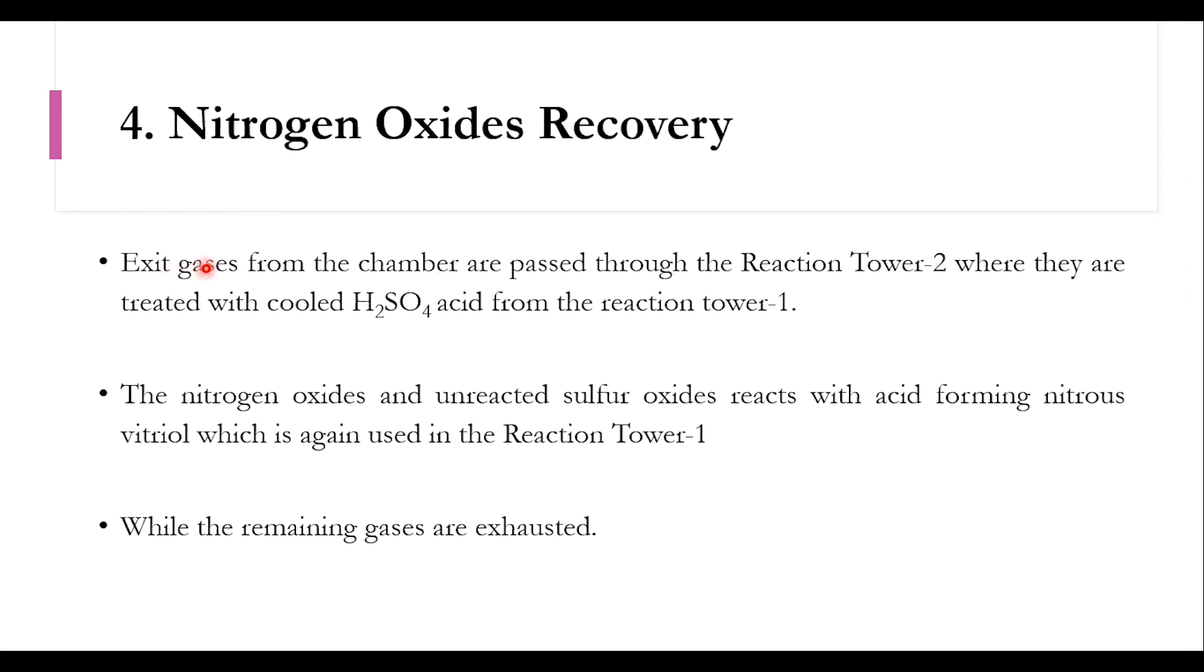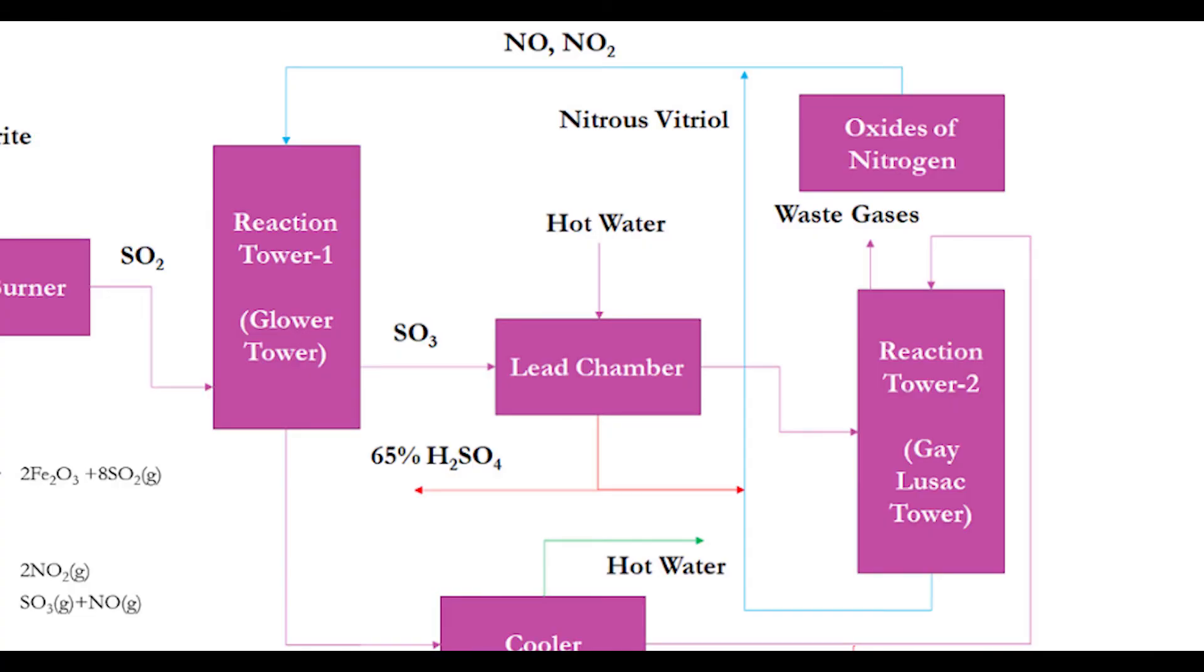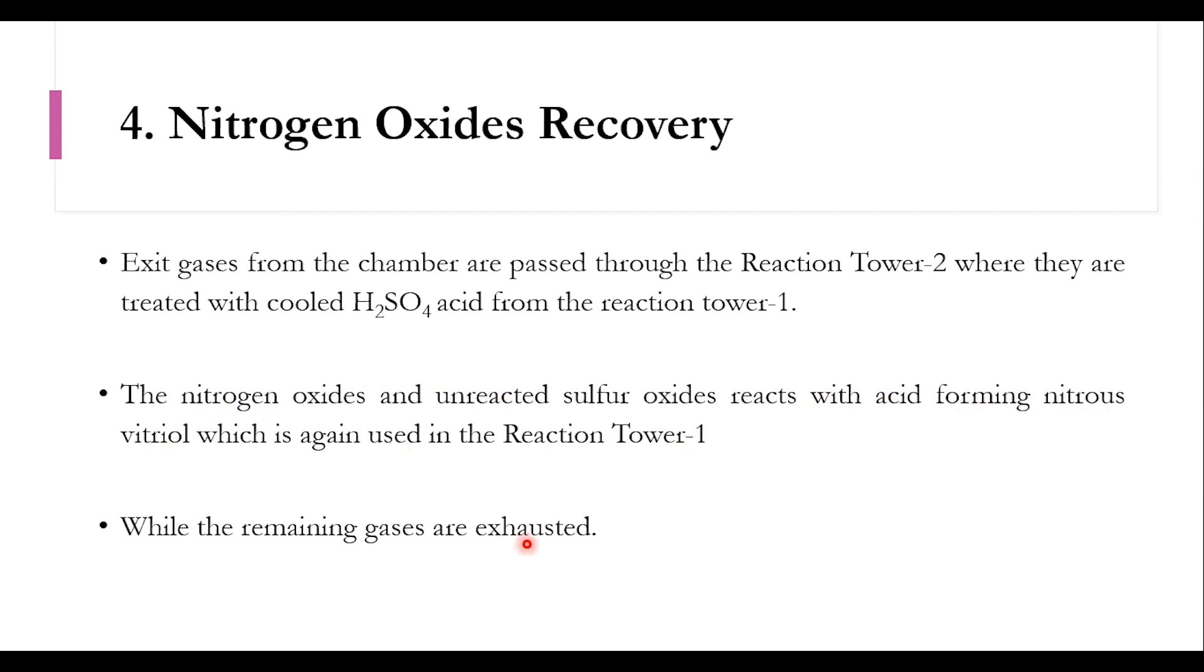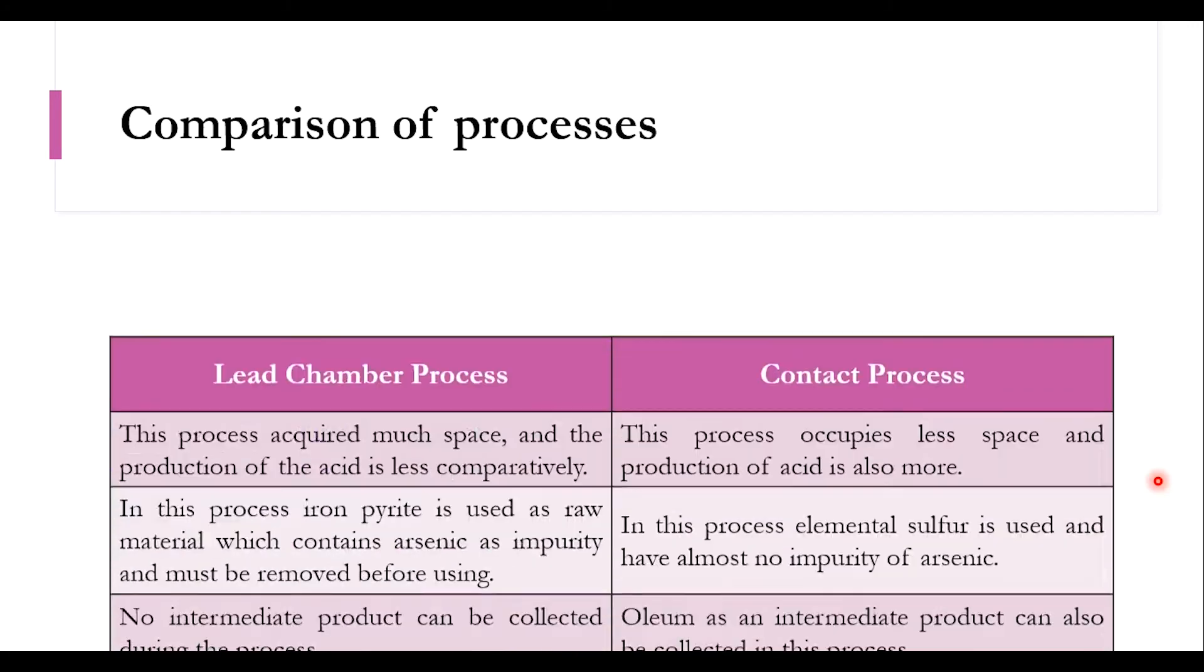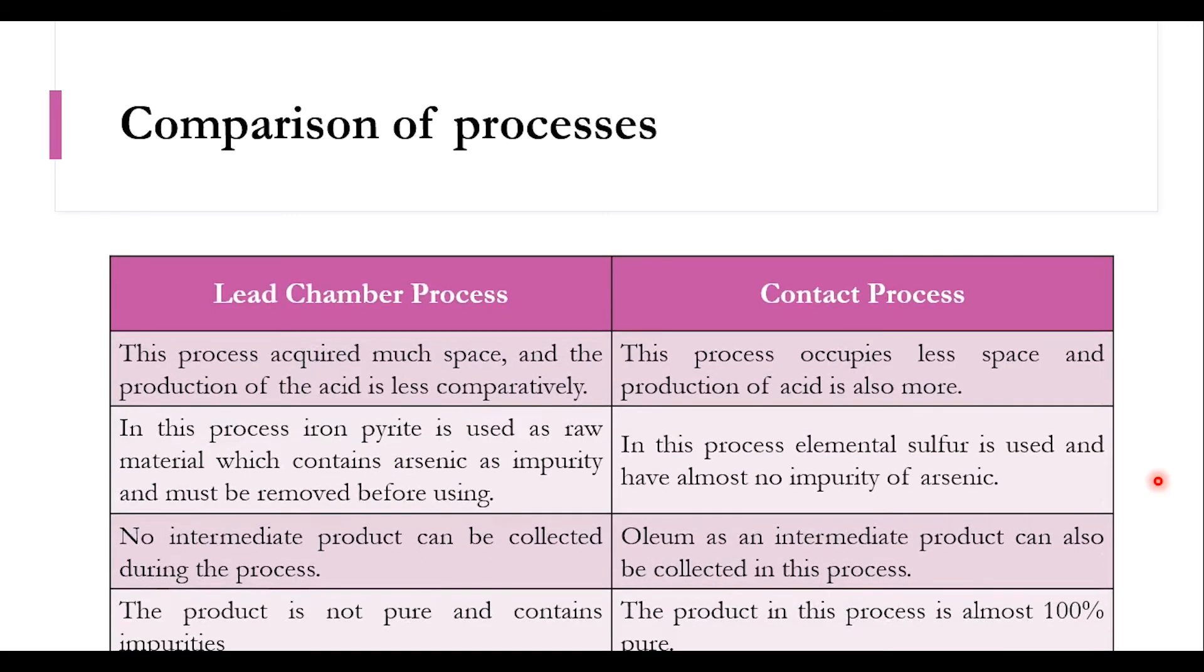The last step is nitrogen oxides recovery. The gases from this chamber are passed through reaction tower two where they are treated with cooled sulfuric acid from reaction tower one. The nitrogen oxides and unreacted sulfur oxides react with acid forming nitrous vitriol, which is again used in reaction tower one, while the remaining gases are exhausted in the system. These are the overall procedures and reactions. Once after completing the lead chamber process, we will now move to the comparison of these two processes.